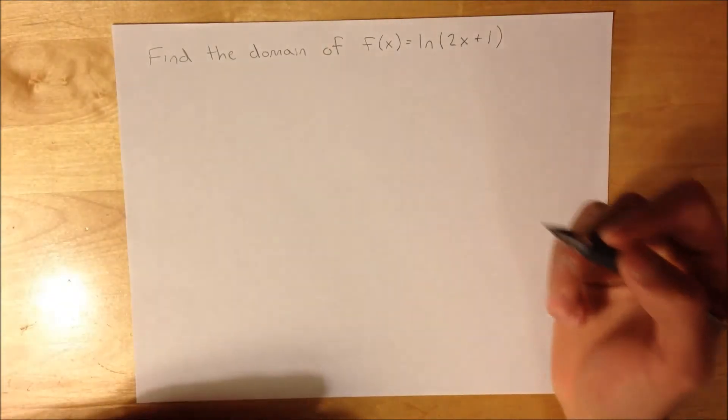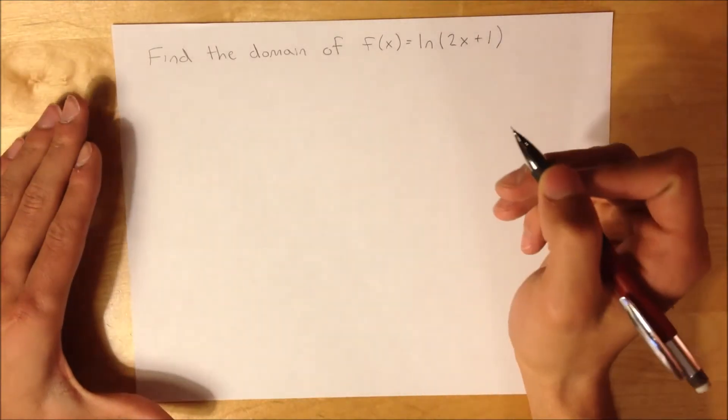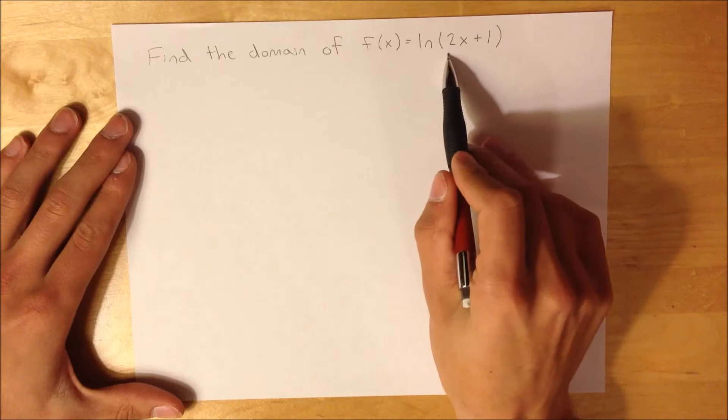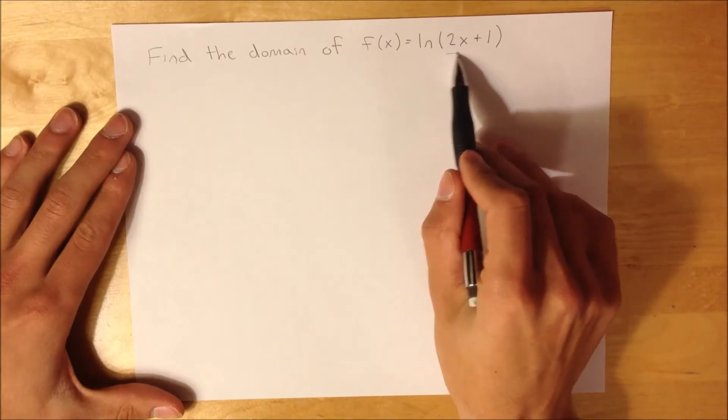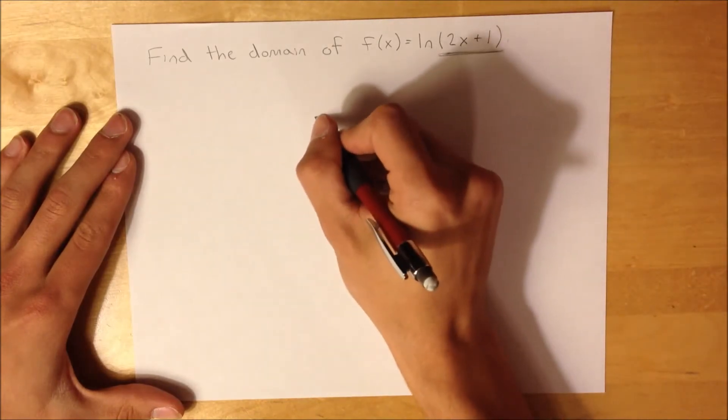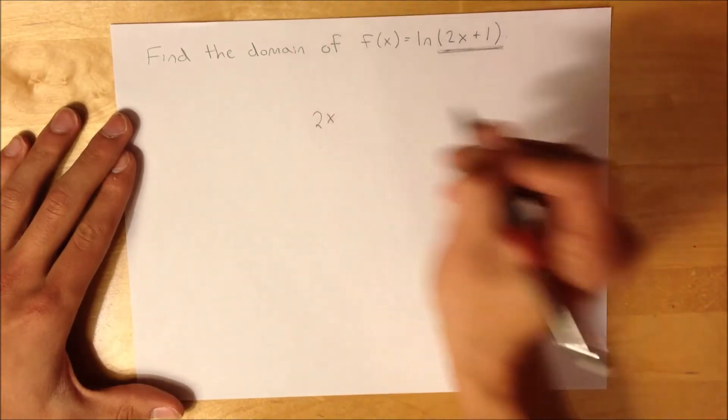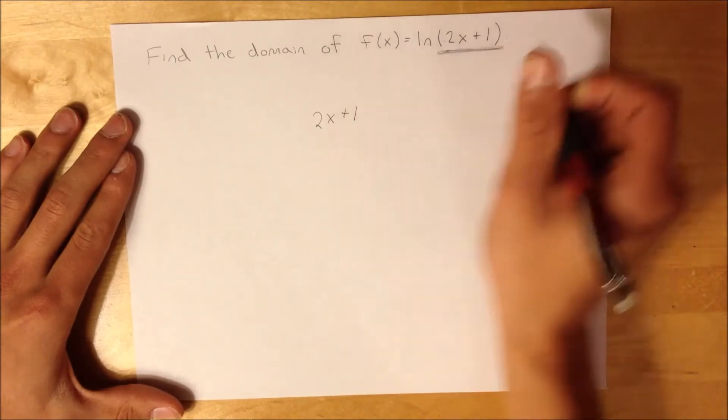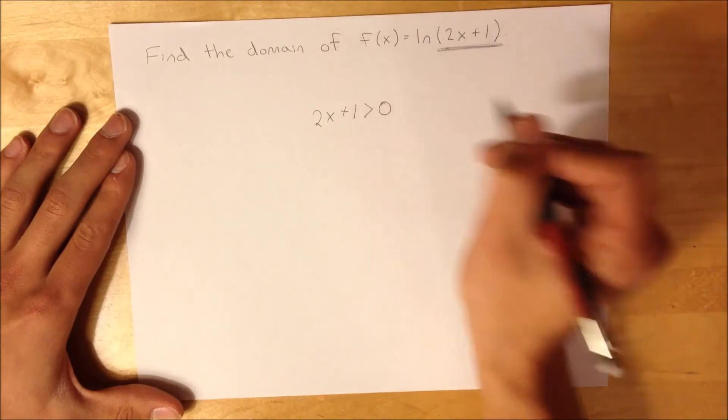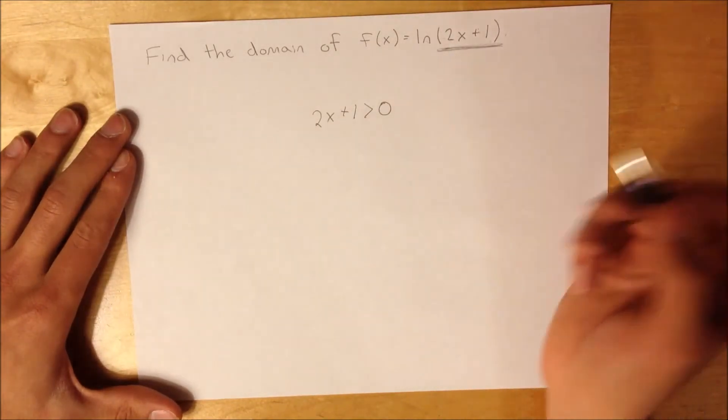Surprisingly, this is actually a really simple problem because the domain is just this - what's inside your ln. So, 2x plus 1, this has to be greater than 0. That's your only restriction with the domain.